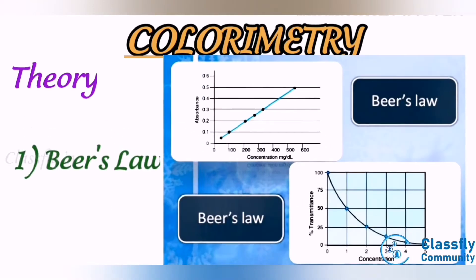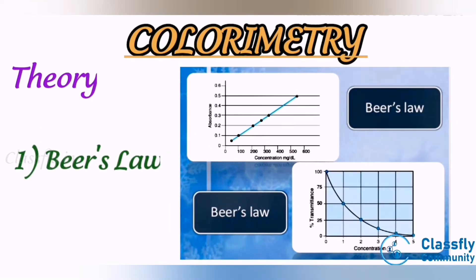Beer's Law: when a monochromatic light passes through a colored solution, the amount of light transmitted decreases exponentially with increases in concentration of the colored substance. That is, the amount of light absorbed by the colored solution is directly proportional to the concentration of substance in the colored solution.